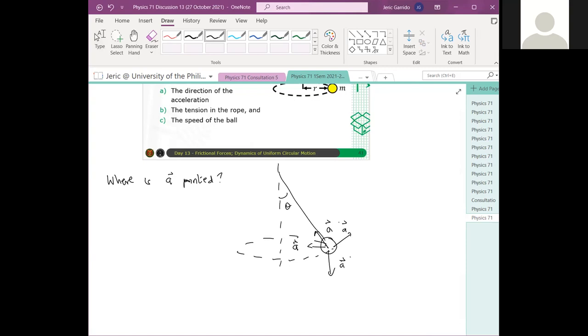Nasaan? Dapat, ang direction ng radial acceleration ay papunta sa axis. It should be towards the circle created by the motion. Kaya nga circular motion. Dapat kung saan yung circular motion mo, yung plane na yun, dun mo lang i-consider yung radial acceleration. Hindi siya papunta sa pivot. Therefore, the direction of the acceleration here is in this direction here.